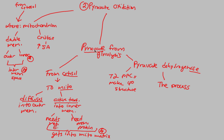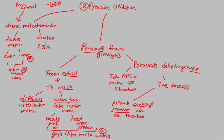The pyruvate dehydrogenase enzyme takes pyruvate and oxidizes it. First, the pyruvate carboxyl group — a COOH group — is removed via oxidative decarboxylation. The end result is that when you remove a carboxyl group through a decarboxylase enzyme, you release CO2. So CO2 is released in this step.